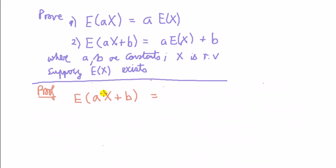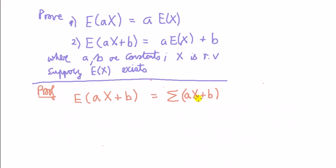I'm going to suppose x is discrete. Write down, supposing x is discrete — brackets are important, because when I put the brackets it means that it's this times this plus this times this. Because it's got to be all the terms in there times the probability.